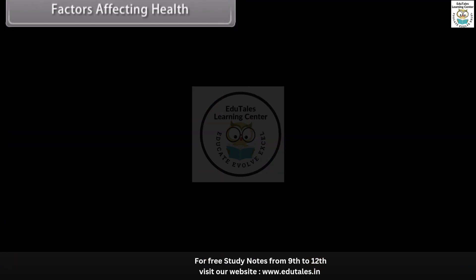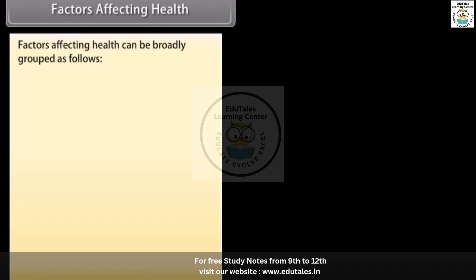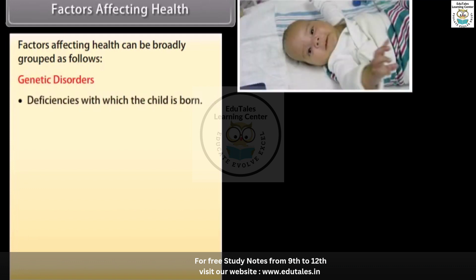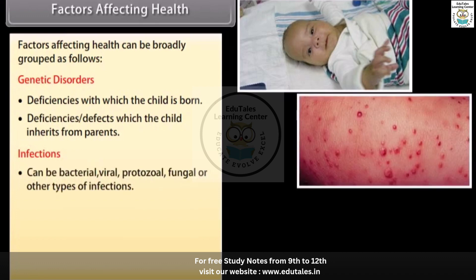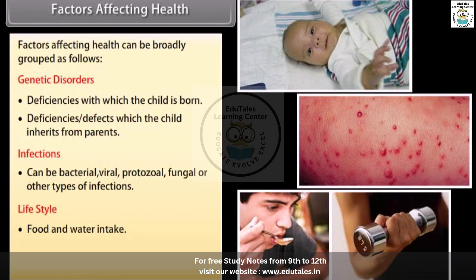Factors affecting health can be broadly grouped as follows: Genetic disorders — deficiencies with which the child is born or inherits from parents. Infections — can be bacterial, viral, protozoal, fungal or other types of infections. Lifestyle — including food and water intake, exercise and rest patterns, and other acquired habits.